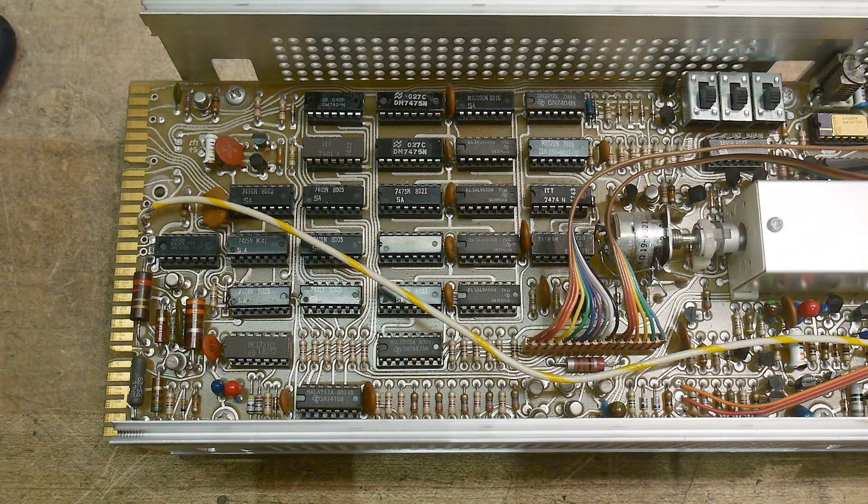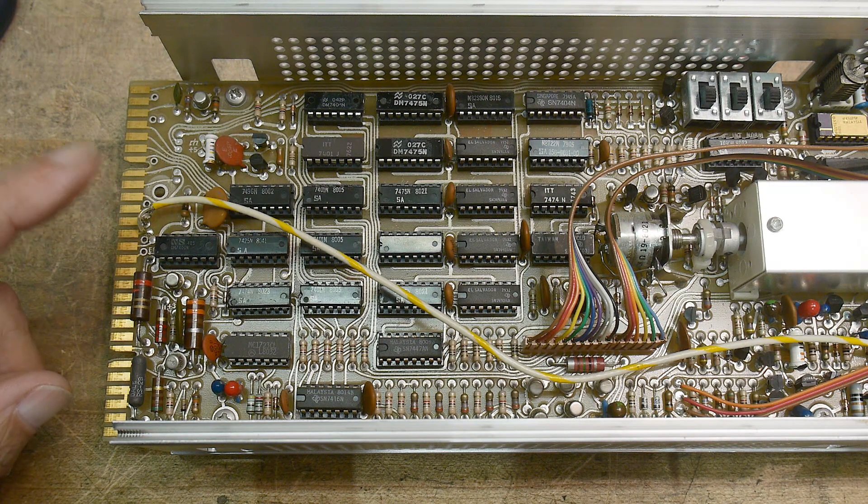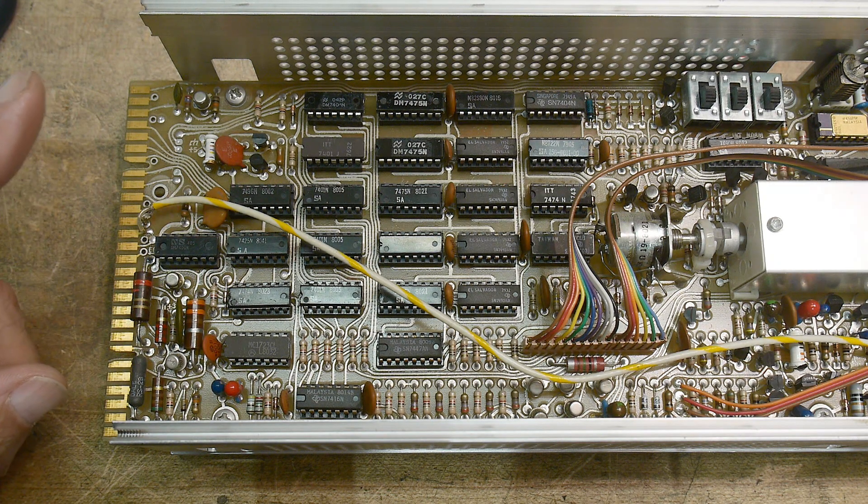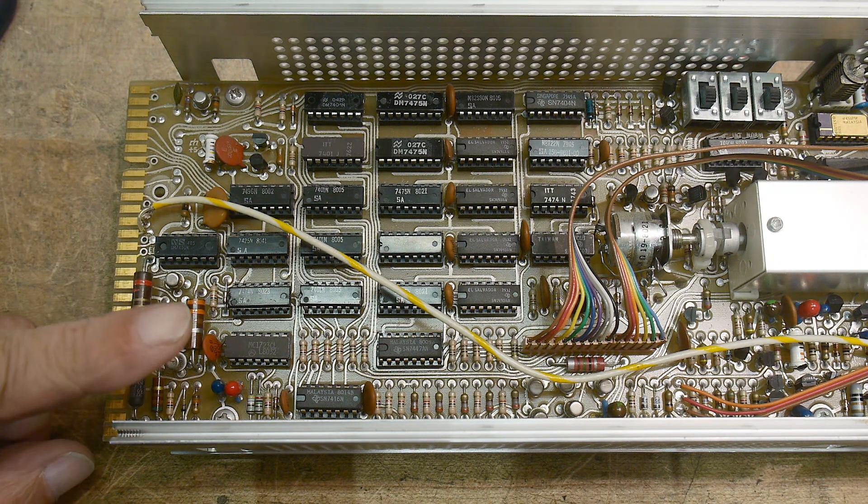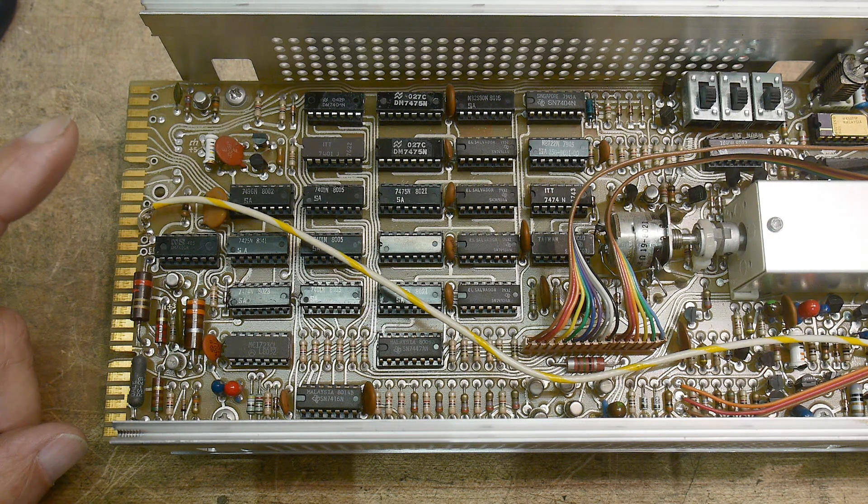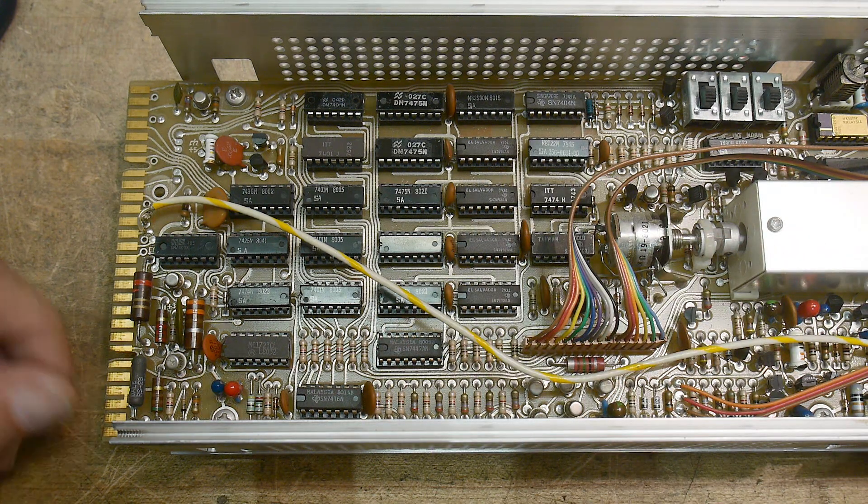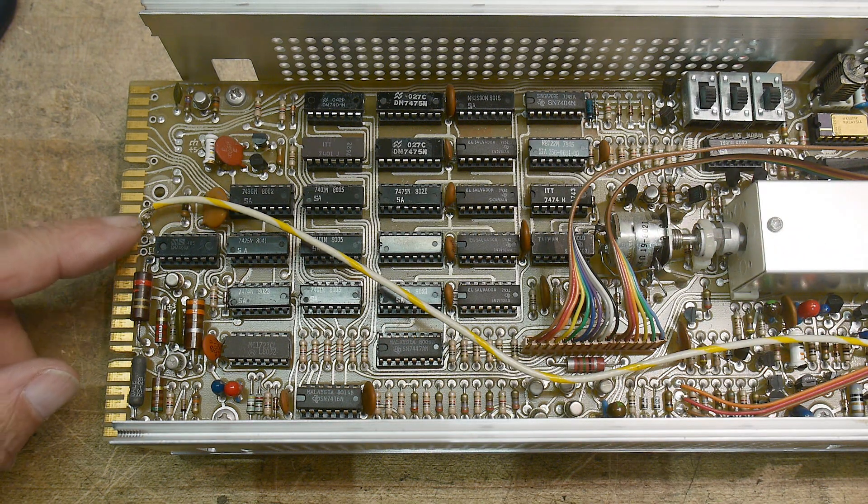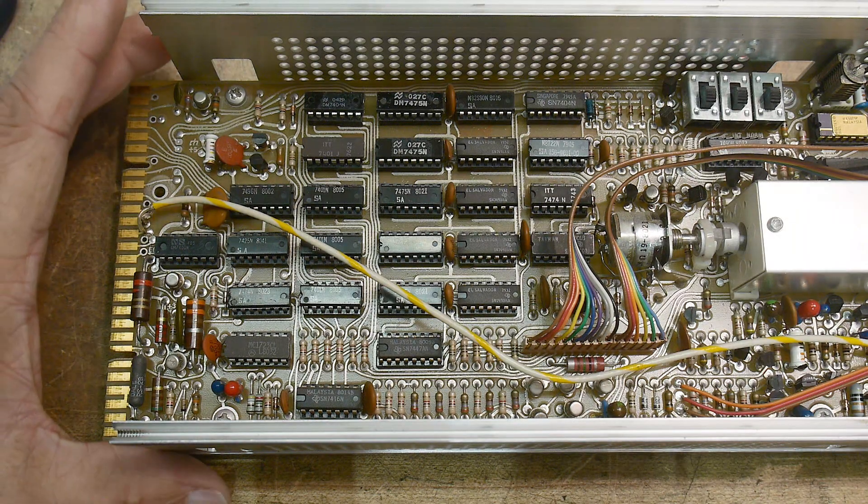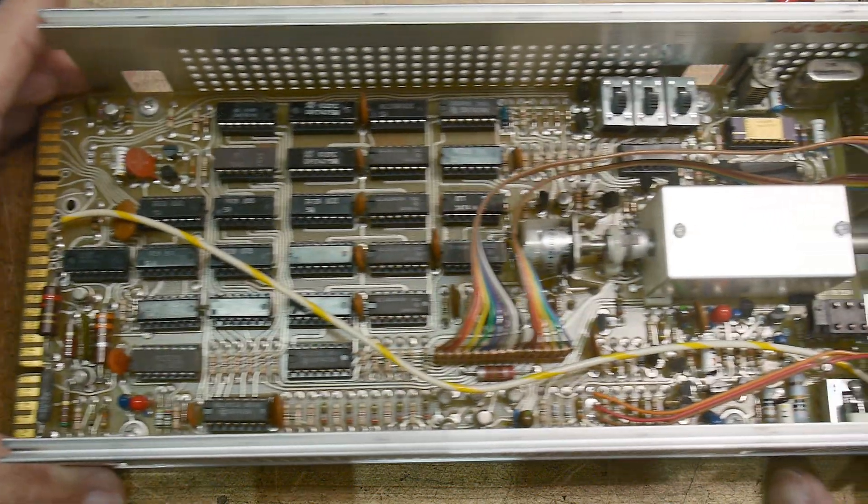So I thought we'd show the insides again. Look at the date codes. 1980, 1980, 1980, 1980, 1980, 1979, 1977. They had a lot of 74s. They must've bought a lot of those in bulk in 1977. It looks like a 1980 unit. Something like that. Yep. Everything's 1980.